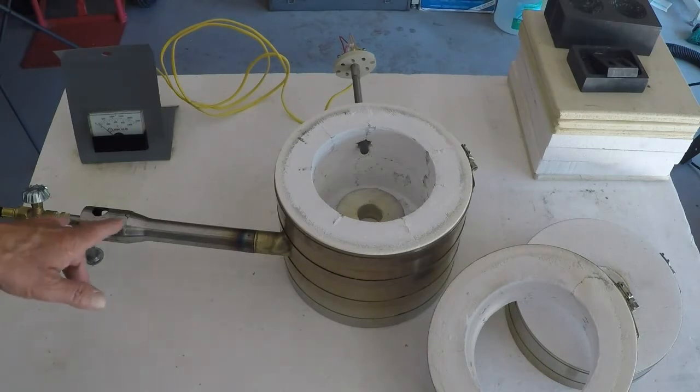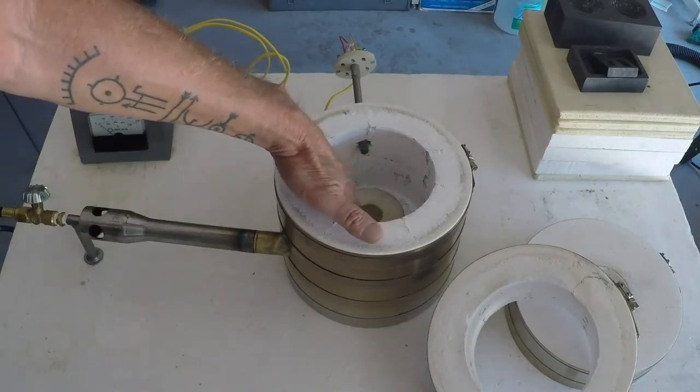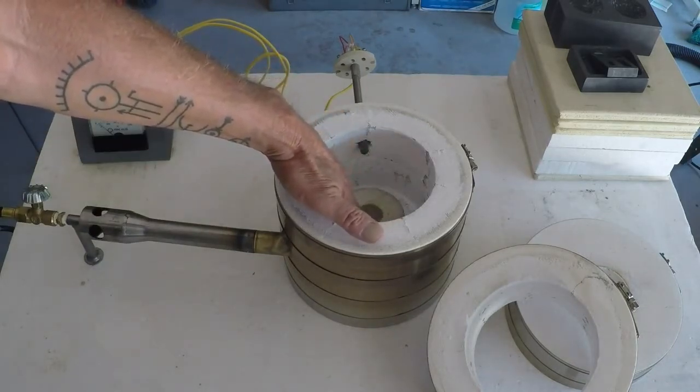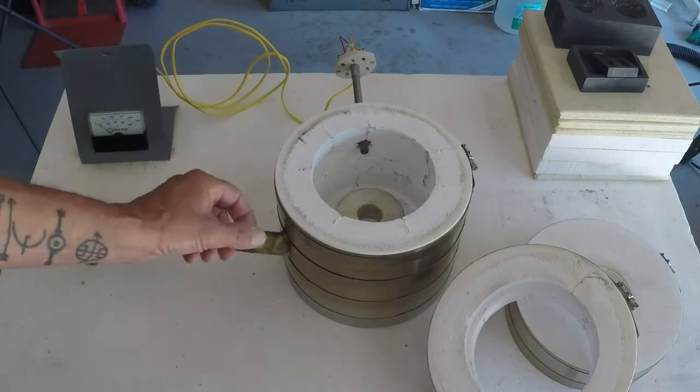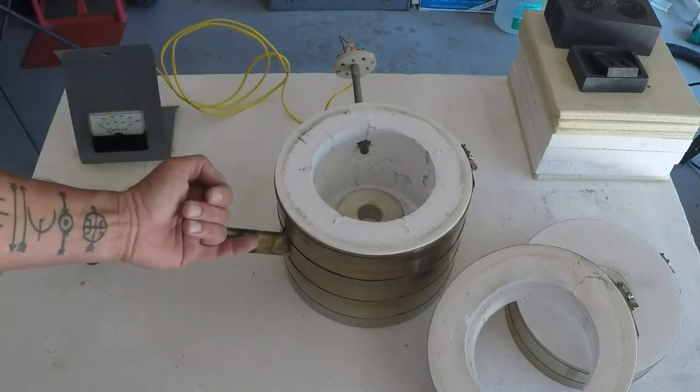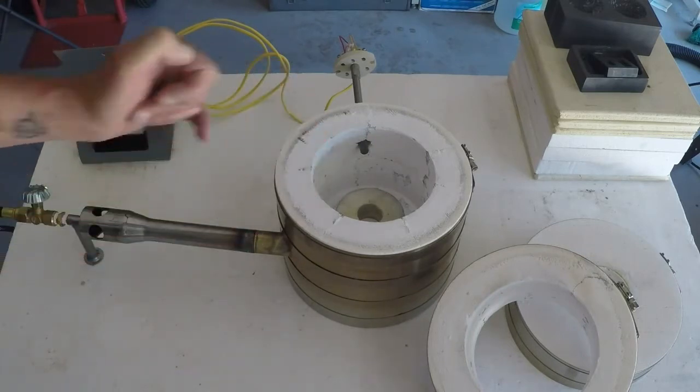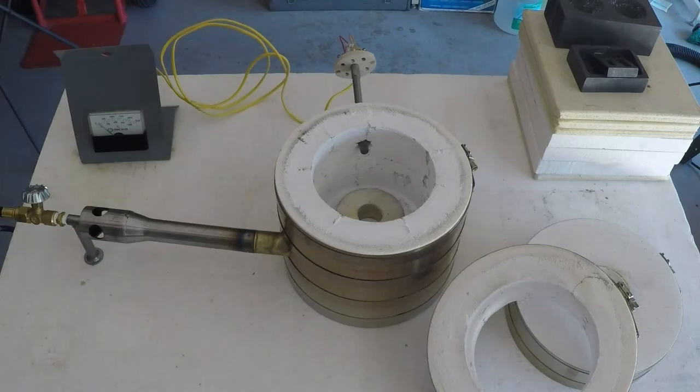Our burner is inserted into the burner port to where the brass tip just barely shows on the inside of the kiln. Once you see that, you back it up about a quarter of an inch so that the end of the brass burner is inside of the insulation approximately a quarter of an inch.